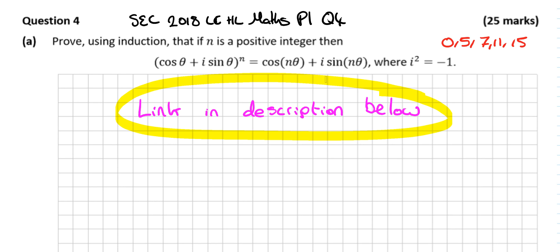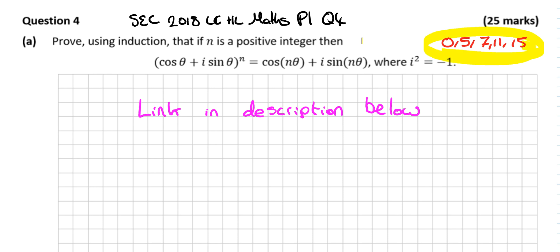Have a look in the description below and you'll see a link to a playlist of all the proofs for the Leaving Cert insert — worth having a look at all of them. A run-down of the question: it's a 0, 5, 7, 11, and 15 mark question, asked in 2018 and I think 2016 as well. In 2016 it was a five-mark question, and then it came up two years later as a 15-mark question.